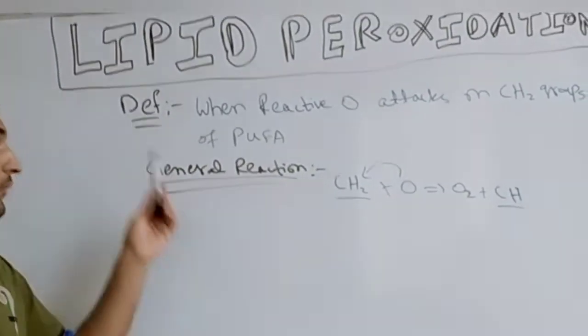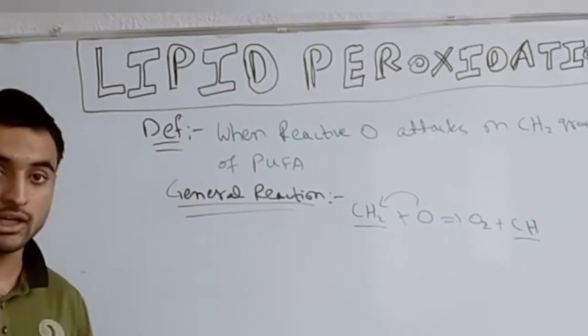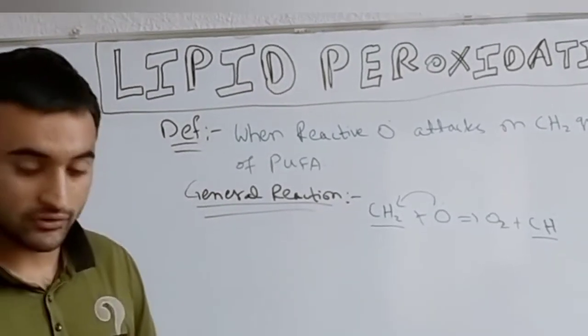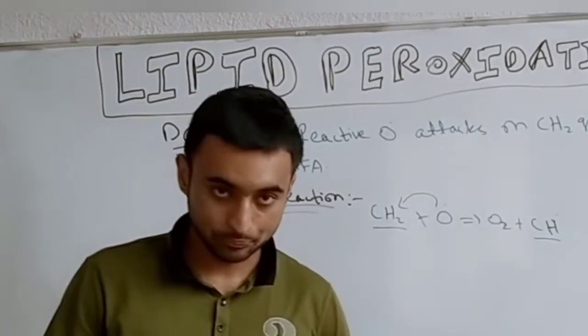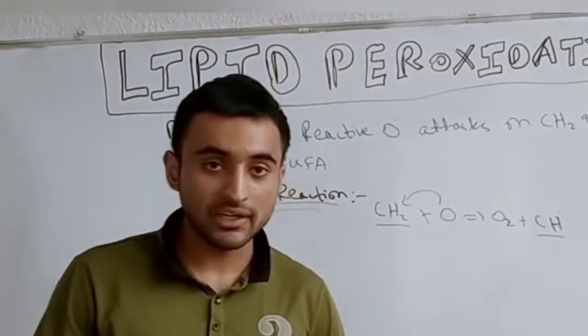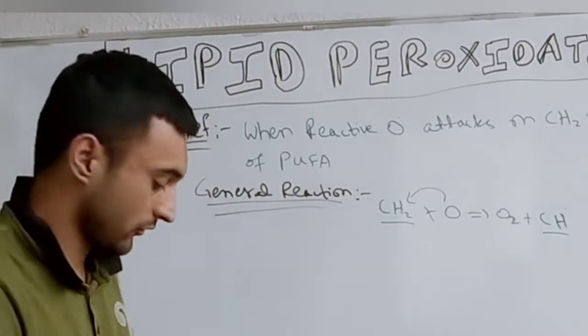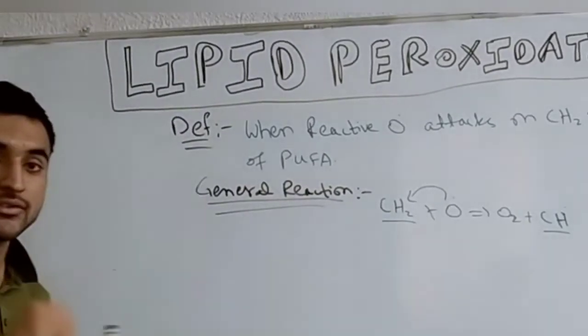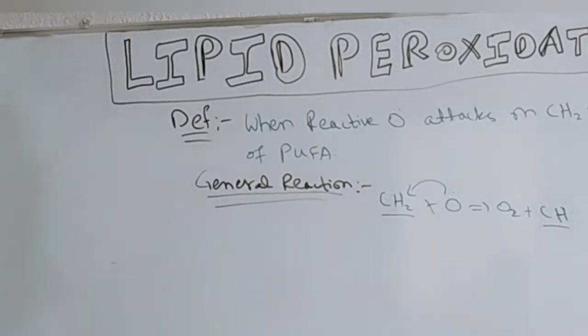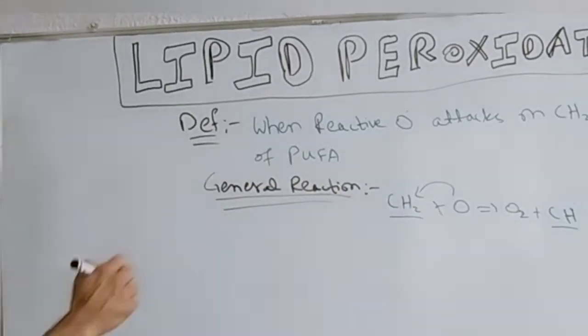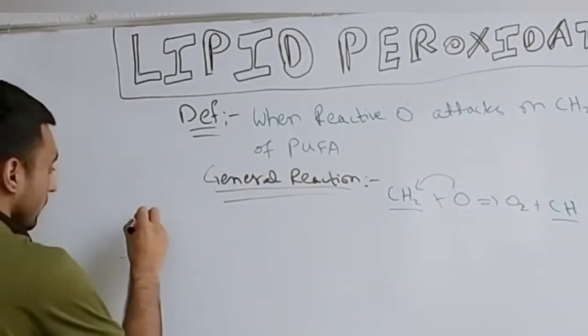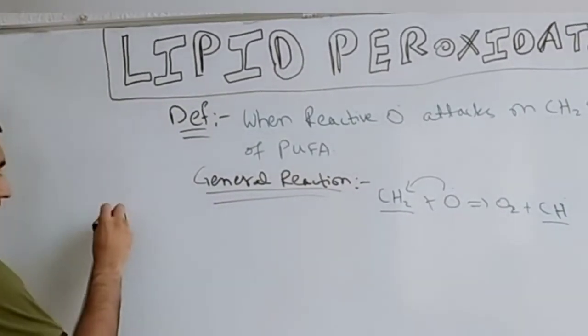There are actually three mechanisms of lipid peroxidation. We have three processes: initiation, propagation, and termination. We will discuss them one by one.